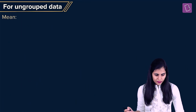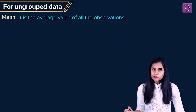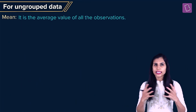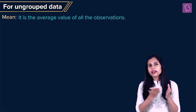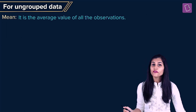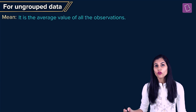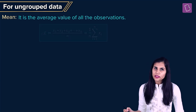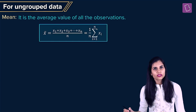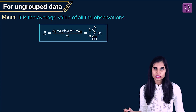Beginning with ungrouped data. The arithmetic mean, or mean, of a data set which is expressed as a mere list of numbers is defined to be the average value of all the observations, which is nothing but the sum of all observations divided by the number of observations.